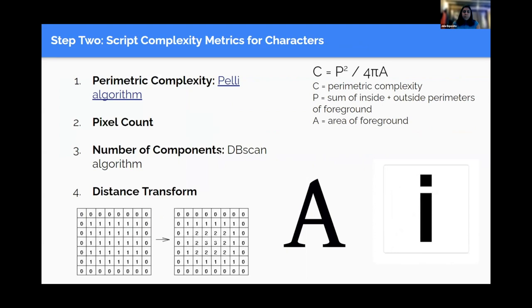Step number two, actually figuring out how to measure complexity of characters. We had a handful of different metrics that we decided to work on. Let me start by going through each of them. Number one, we had perimetric complexity. This is just measuring how complex the perimeters of a character are, and it is given by this formula over here on the right and by the Peli algorithm. Next, we had pixel count, which just measured the fraction of black pixels in one of these 2D images, which can give you an idea of how much space these characters take up.